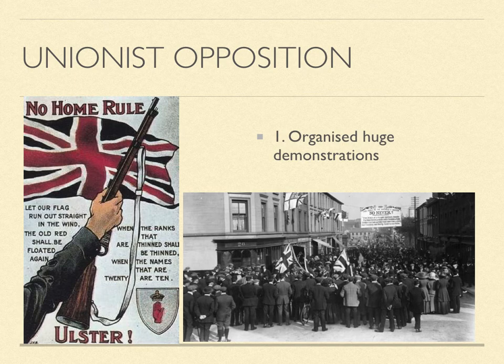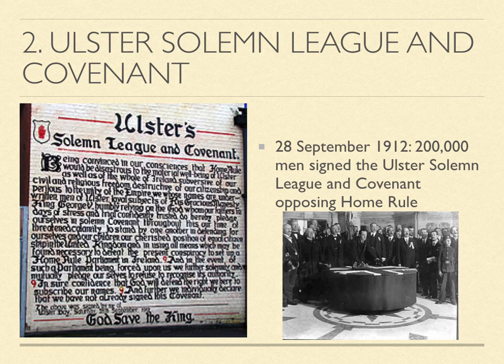They had four main strategies that evolved over the following two years. First, they organised huge demonstrations against Home Rule — mass meetings to show their opposition. Second, on the 28th of September 1912, over 200,000 men signed a document called the Ulster Solemn League and Covenant, vowing to stop Home Rule by any means necessary. Some men even signed in their own blood. A quarter of a million women also signed a separate declaration stating their opposition to Home Rule.